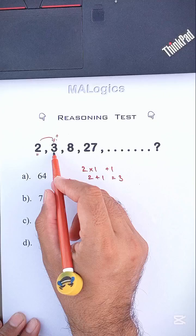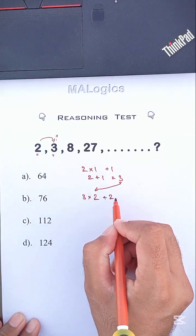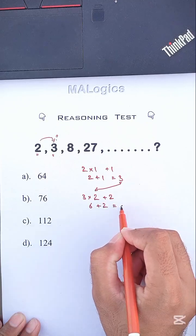Okay, now we use this 3 for the next number. Now, 3 times 2 plus 2. Here, 3 times 2 equals 6. Now, 6 plus 2 equals 8.